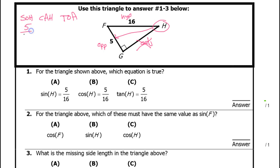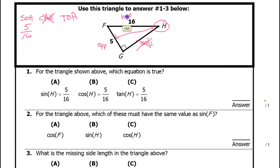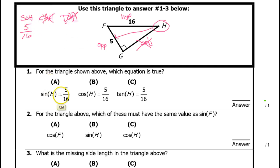So sine is 5 over 16. Cosine would be adjacent over hypotenuse, but we have no number there, so it's not going to be that — adjacent is a no-go. And tangent is also a no-go, because it also involves adjacent. So the answer is A: the sine of H is 5 over 16.